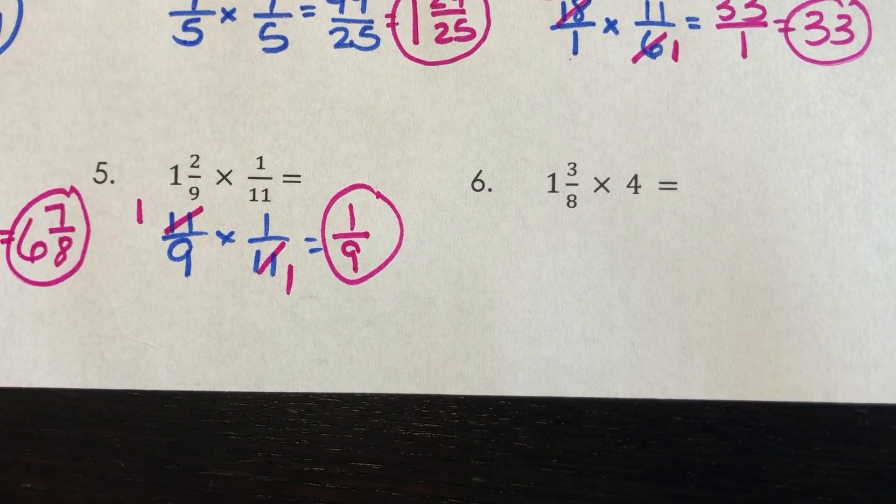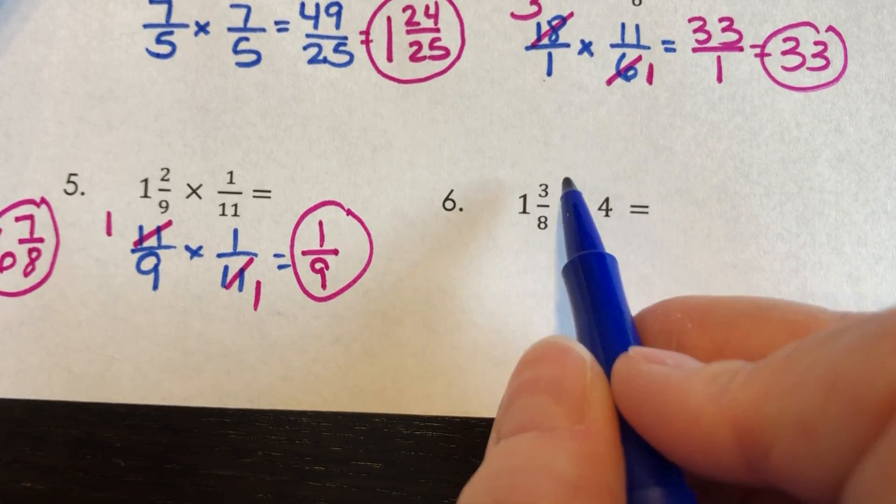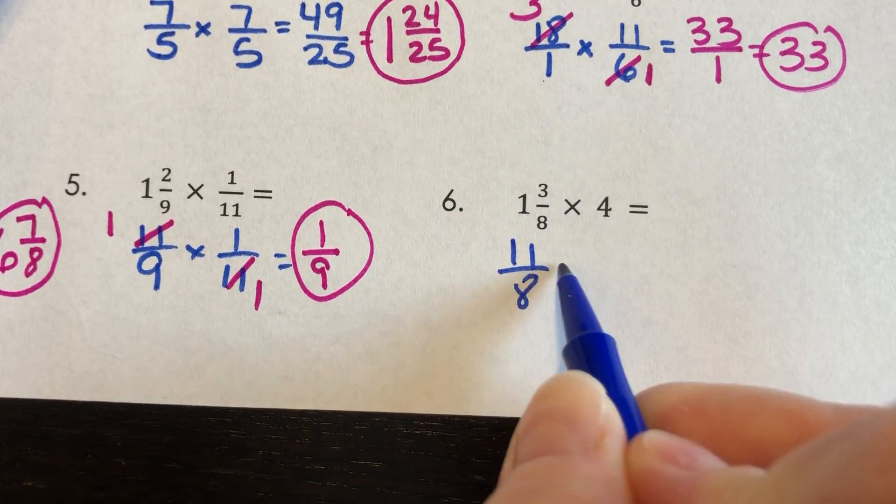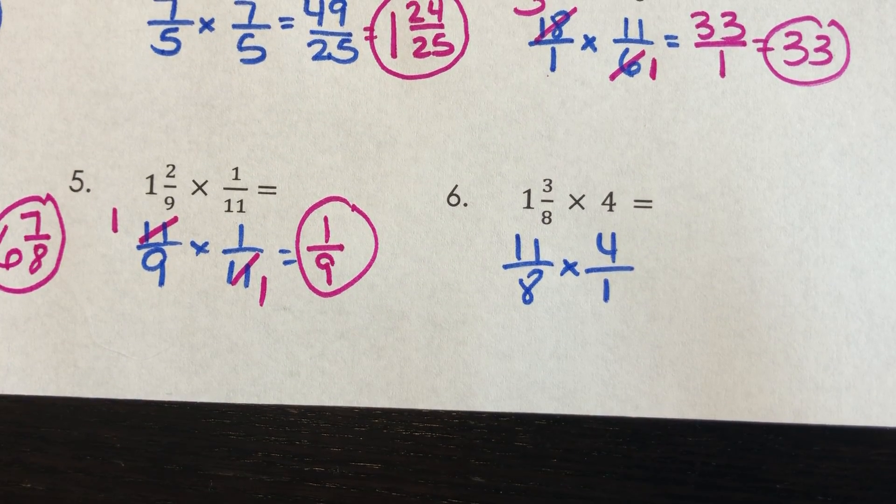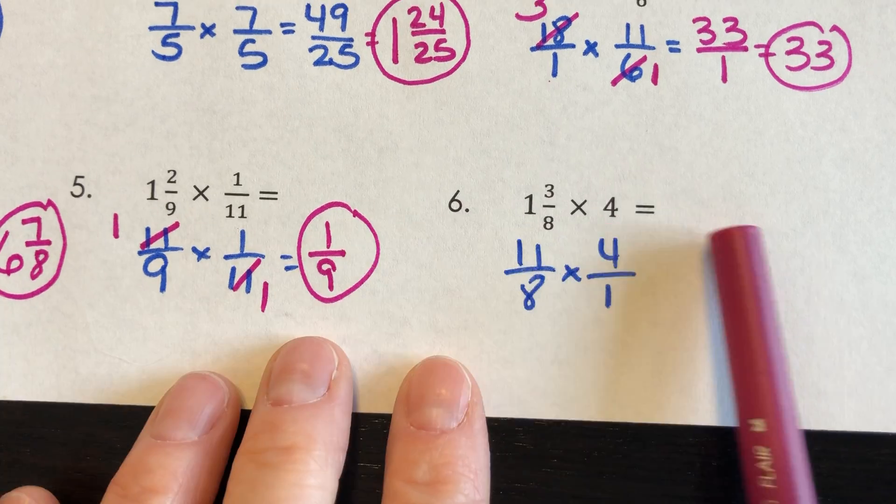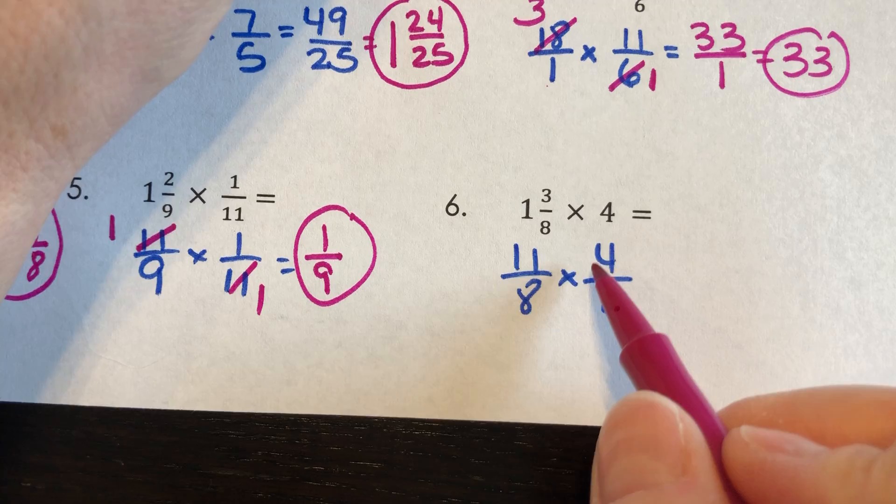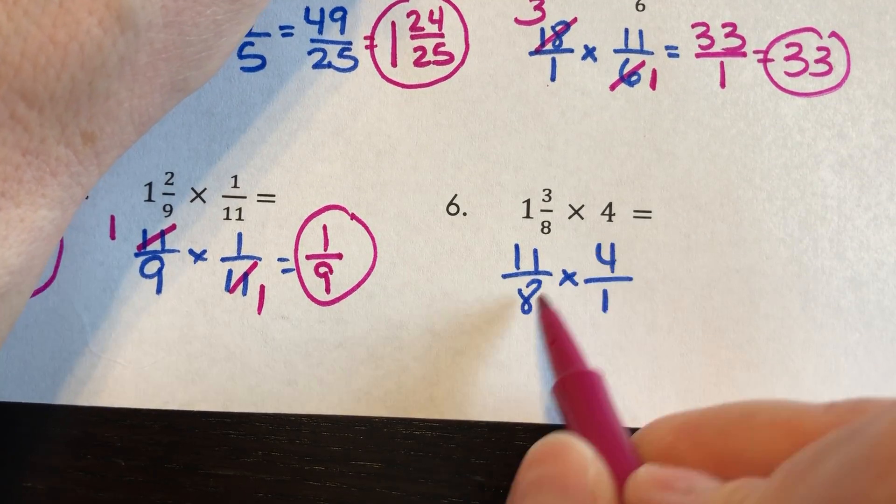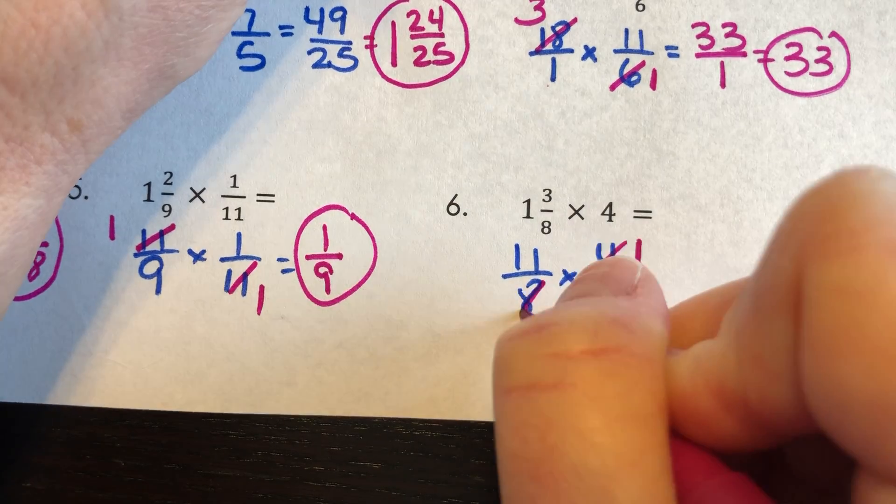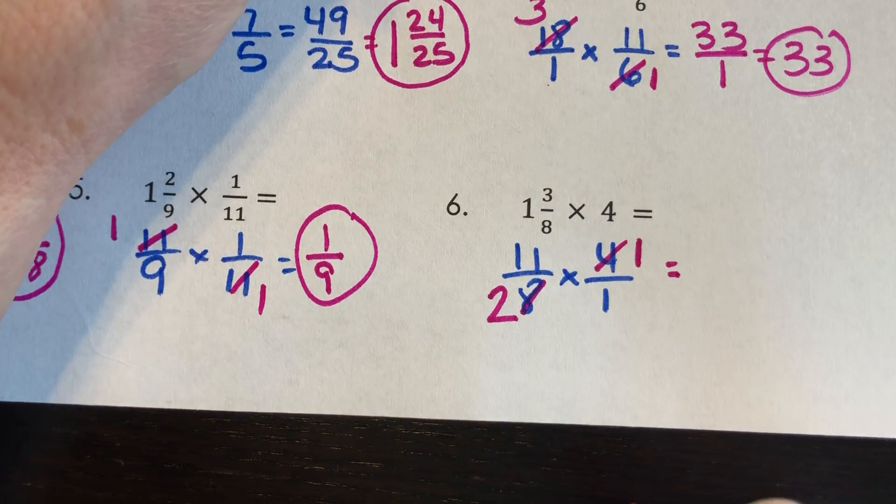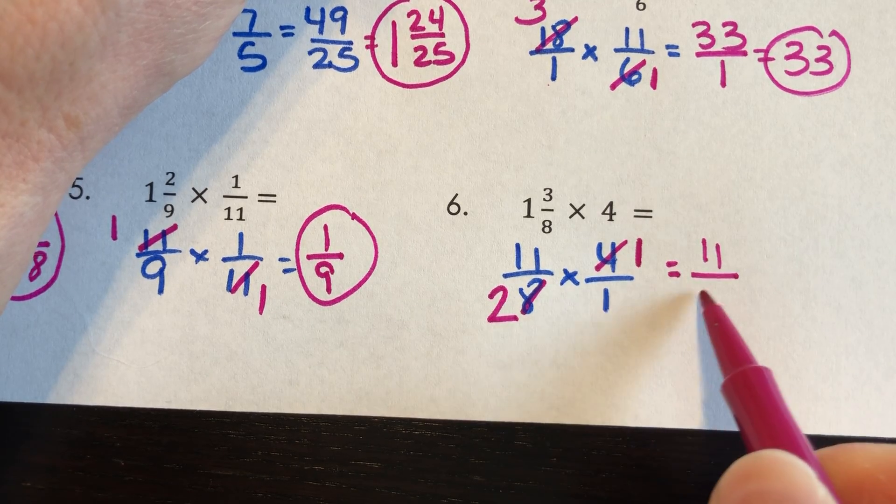And our last one for this bell work today. 8 times 1 is 8. 9 times 11. So I have 11/8 times, I'm going to write that as a fraction, 4 over 1. Now, if you want, maybe you just wrote 44/8, right? You could do that. Or you could notice, hey, 4 and 8. 4 divides into both of those. 4 goes into 4 once. 4 goes into 8 twice. So 11 times 1 is 11. And 2 times 1 is 2.